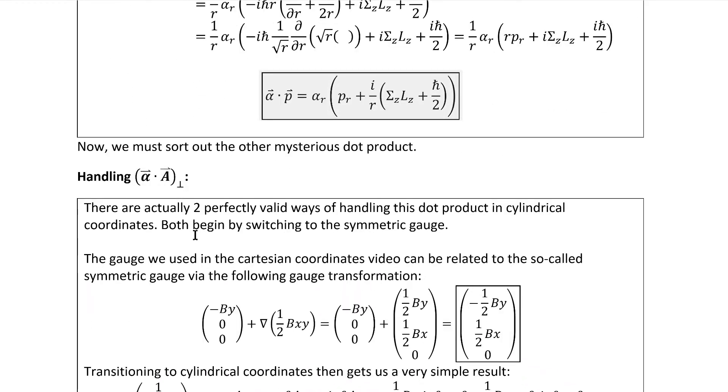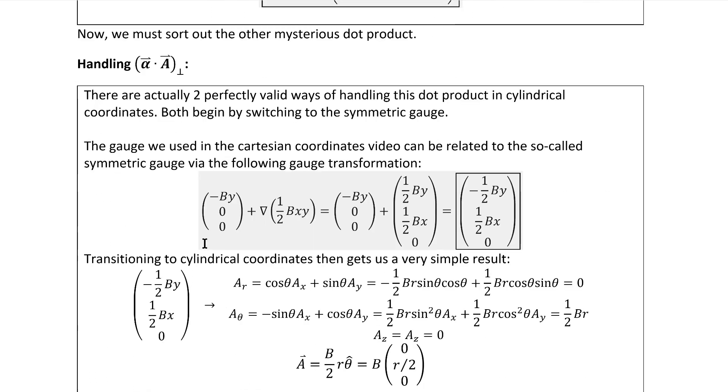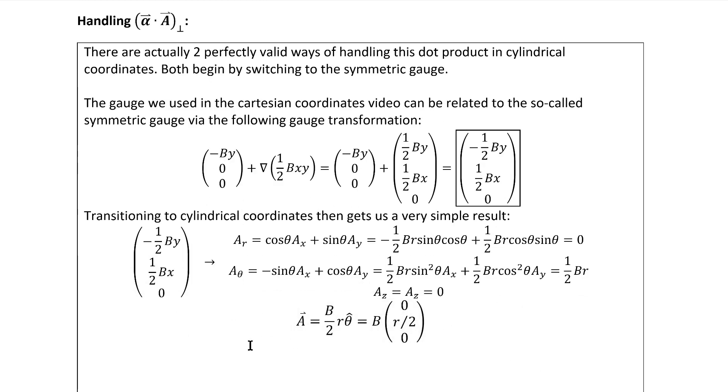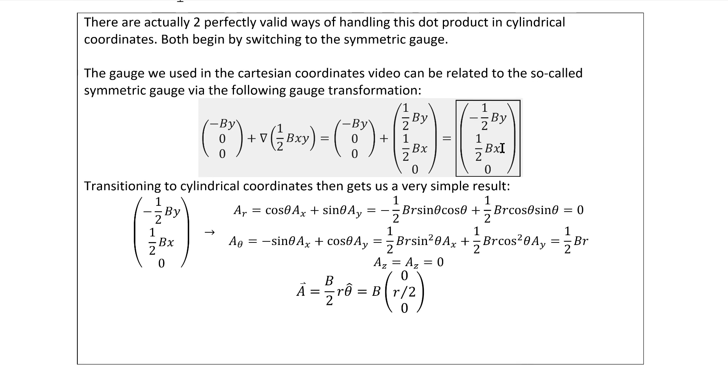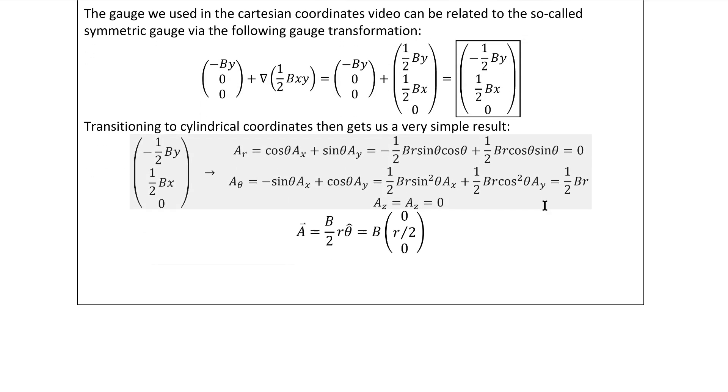we now need to handle the alpha dot a perpendicular dot product. Now just for clarity's sake, I maintained the z component of the vector potential when doing the gauge transformation and the coordinate transformation, but then I drop it afterwards because it has no benefit at that point. Now the gauge transformation from the gauge we use to this one is perhaps pretty obvious, but I mean, a lot of times you talk about gauge transformations and students don't ever see one explicitly. It's worth at least seeing one. Here we see that the gradient of this particular scalar factor here does in fact combine with our original vector potential to yield the one that's usually called the symmetric gauge. Transitioning to cylindrical coordinates then causes the symmetric gauge to make a lot of sense because we get a vector potential similarly simple to what we started with, except it's simple in cylindrical coordinates instead of Cartesian coordinates.